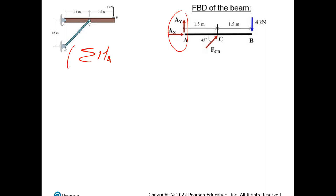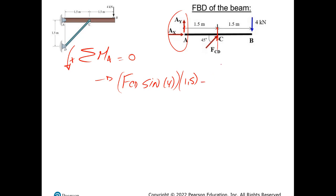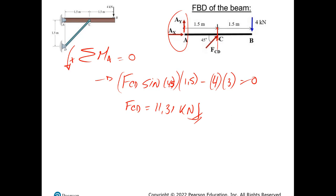Solving for FCD: FCD × sin(45°) × 1.5 − 4 × 3 = 0, which gives FCD = 11.31 kilonewtons. Now that I've found FCD, I can find AX and AY using sum of forces in X and Y. For sum of forces in X = 0: AX + 11.31 × cos(45°) = 0, giving AX = −8 kilonewtons.